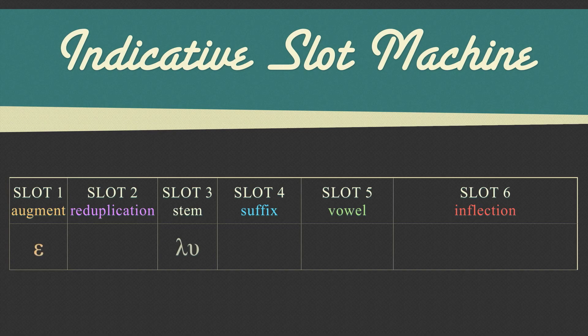Slot two is reduplication. Reduplication takes the consonant that begins the stem and duplicates it with an epsilon. Some tense and voice combinations have reduplication. Some don't.